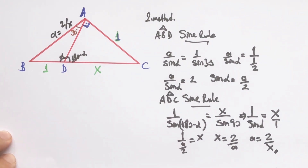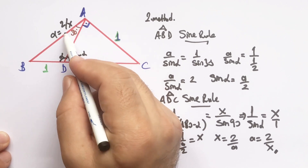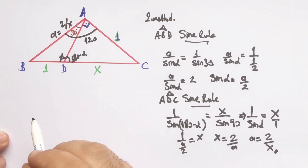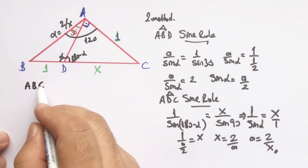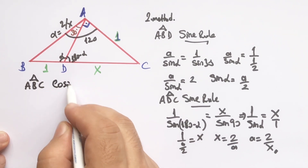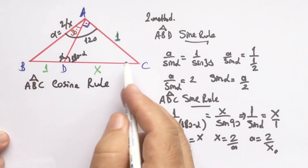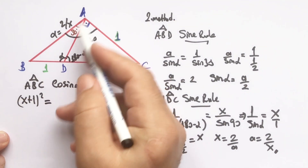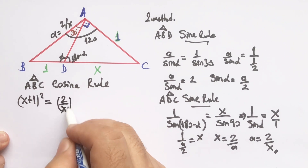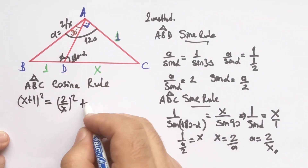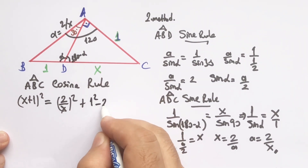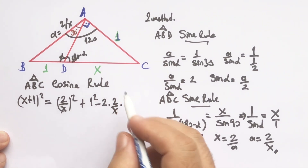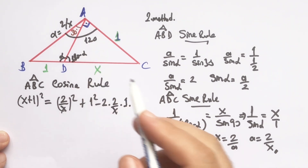Focusing on the biggest triangle, we apply the cosine rule: (x + 1)² = (2 over x)² + 1² − 2 × (2 over x) × 1 × cos 120°.